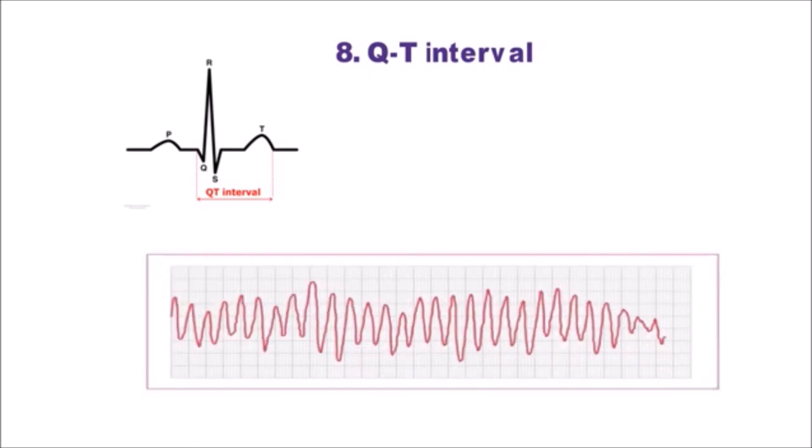Step 8 is QT interval. It is from the start of q-wave to the end of t-wave. As a rule of thumb, normal QT is less than half the preceding RR interval. An abnormally prolonged QT is associated with increased risk of ventricular arrhythmias, especially torsades de pointes.